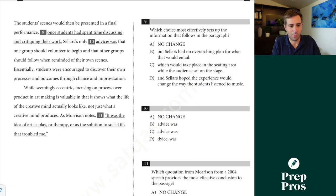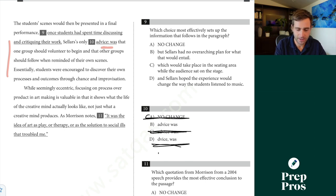Okay. It's been a while since I've taken this. I don't remember it all super well. Question nine, which choice most effectively sets up the information that follows in the paragraph. Well, this is just a context question. I need to read this before I can answer question nine. So I'm going to move on to question 10. But I'll read that first sentence before the underline portion. The students' scenes would then be presented in a final performance. Seller's only advice was, don't have an independent clause before the colon there. So we can get rid of that. We can get rid of that. This is wrong. This is a little error I need to correct in the test. It should say advice there. Advice, sorry, there. But no use for the comma there. That's an inappropriate comma between the subject and the verb. Just no commas needed at all. D is correct. So now we're looking for the context as we go back to question nine. Seller's only advice was that one group should volunteer to begin and that other groups should follow when reminded of their own scenes. Essentially, students were encouraged to discover their own processes and outcomes through chance and improvisation.